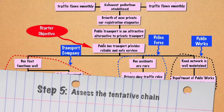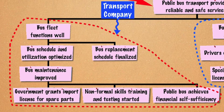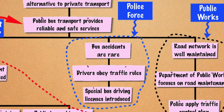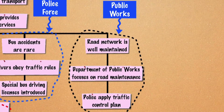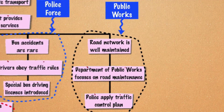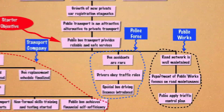Step 5: Assess the tentative chain. The tentative chain opens a host of potential consequences. It may require additional technical assessments, analysis, and feasibility studies or even the hiring of experts. While these will be carried out during the project preparatory technical assistance or PPTA implementation, these activities must be noted and included in the succeeding steps.